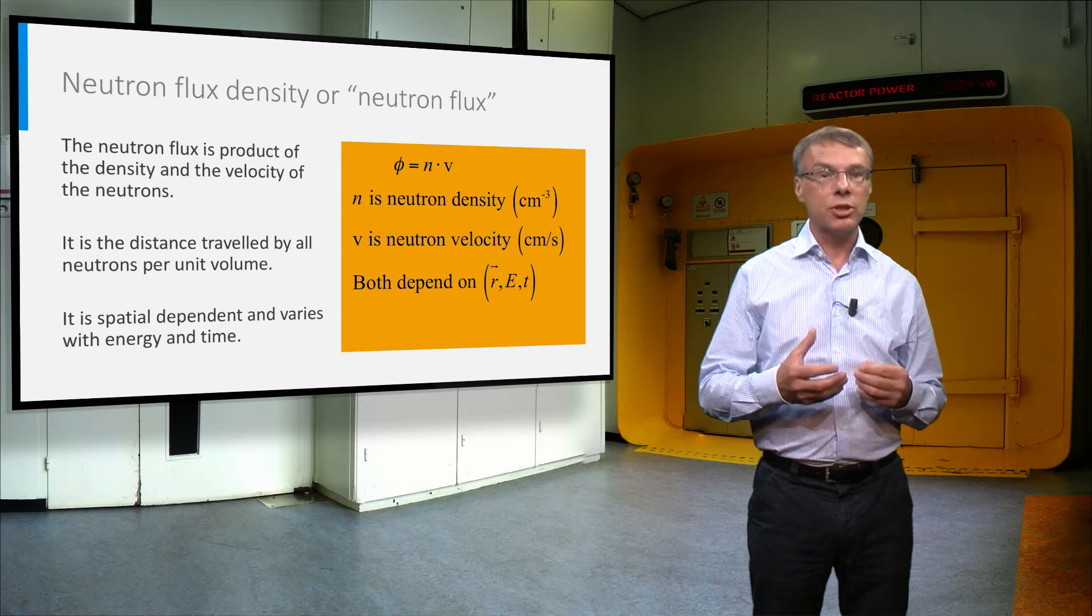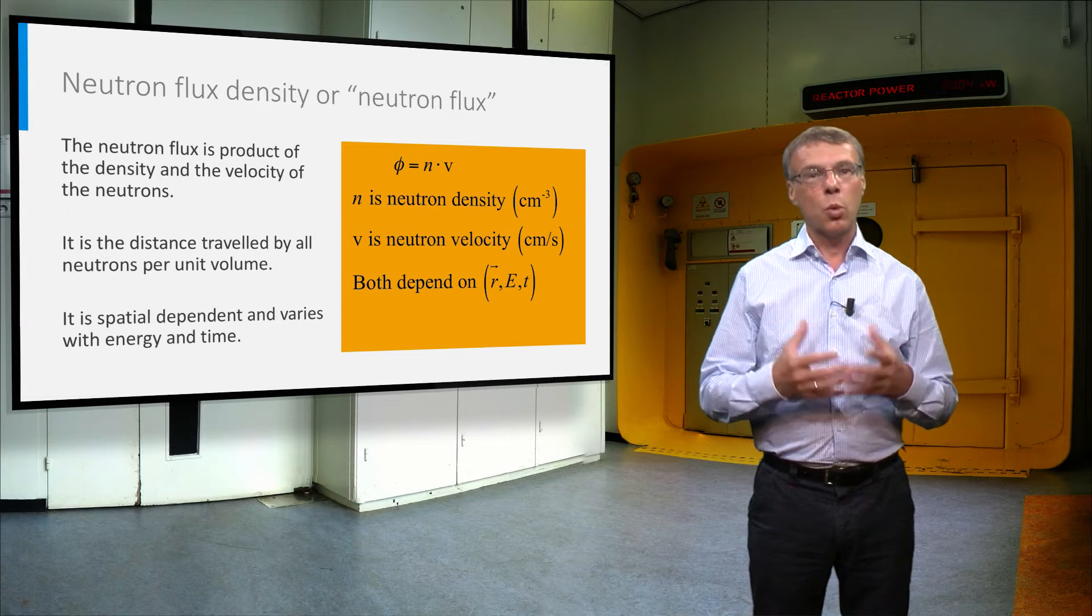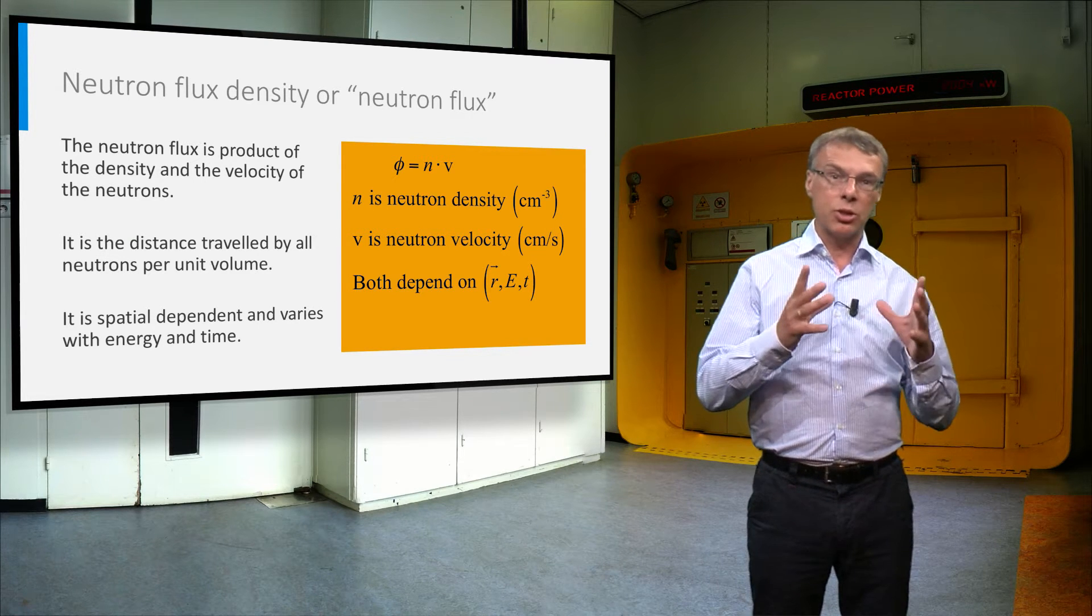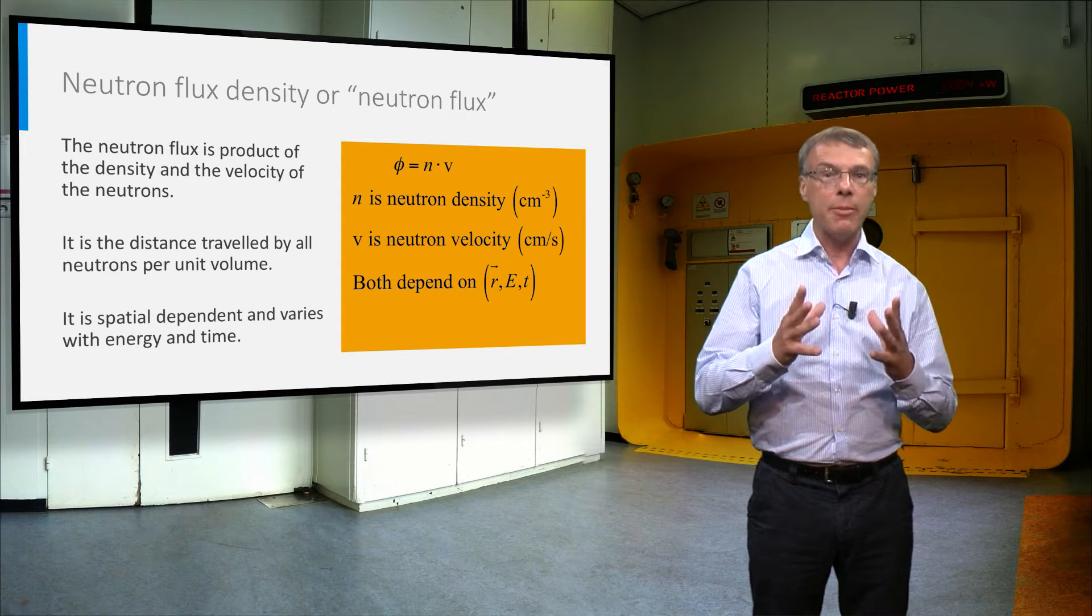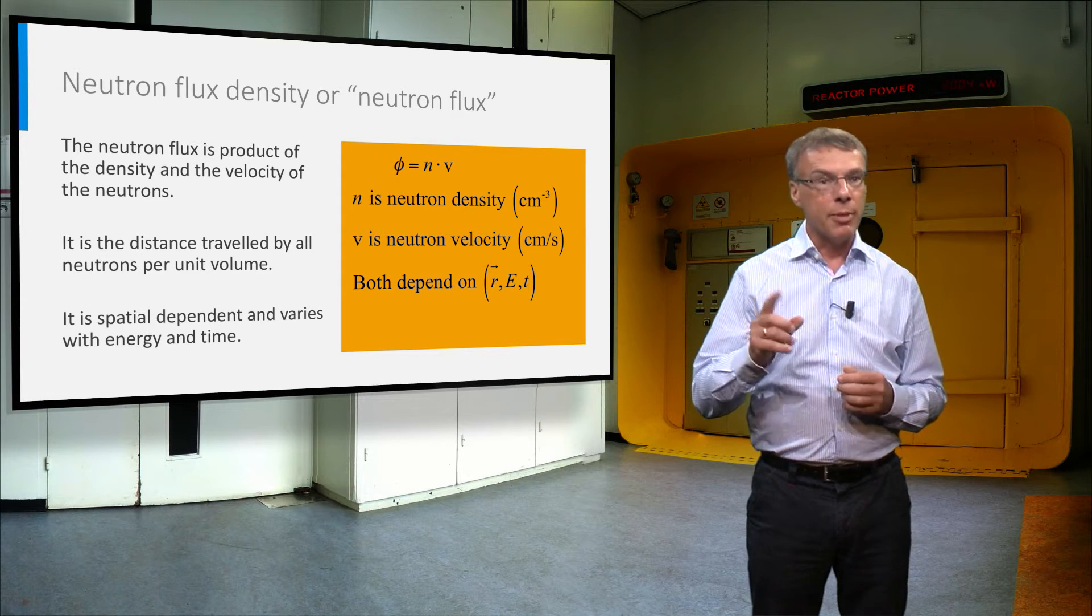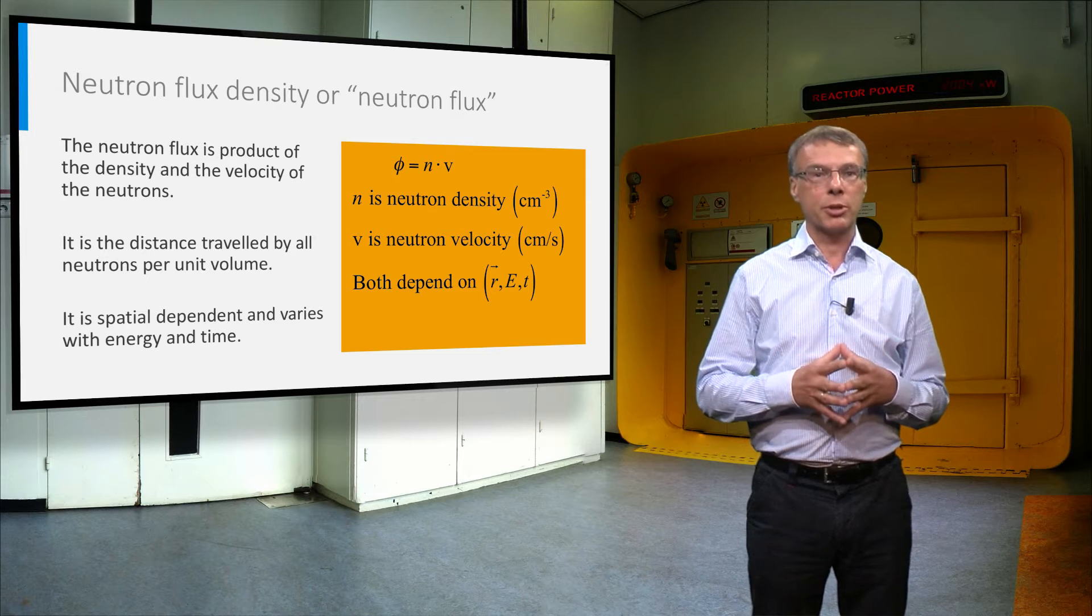For simple applications with no energy dependence, the one-group approximation can be used, in which it is assumed that all neutrons have the same energy. In the remainder of this video we will adopt this one-group approximation.